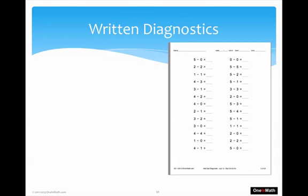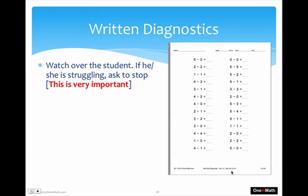This page is from the Sub 1D booklet and it's the first page — Sub 0–5 to 0–5 — and you can see this at the bottom, which shows the diagnostic packet name and the module name. As a child is doing these packets, we ask that you watch over your child. If they're struggling, please ask them to stop, because we don't want them to feel inadequate. The problems get harder as the pages go on, so it's not necessary that they complete the entire packet — really try to see how far they can go.